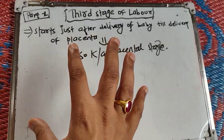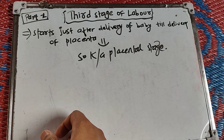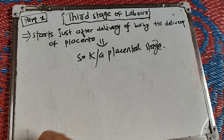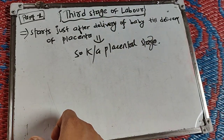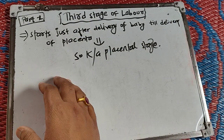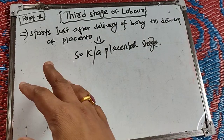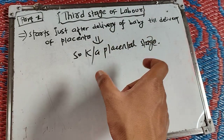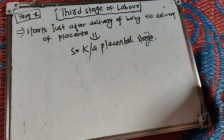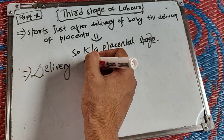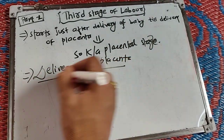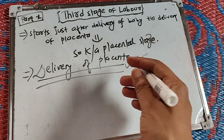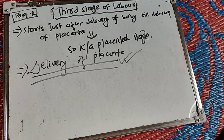Welcome to this video tutorial on the third stage of labor. Part one covers the definition, management, and events of this stage. The third stage of labor starts just after the delivery of the baby and ends with the delivery of the placenta. It is also known as the placental stage. The main event in this stage is delivery of the placenta.